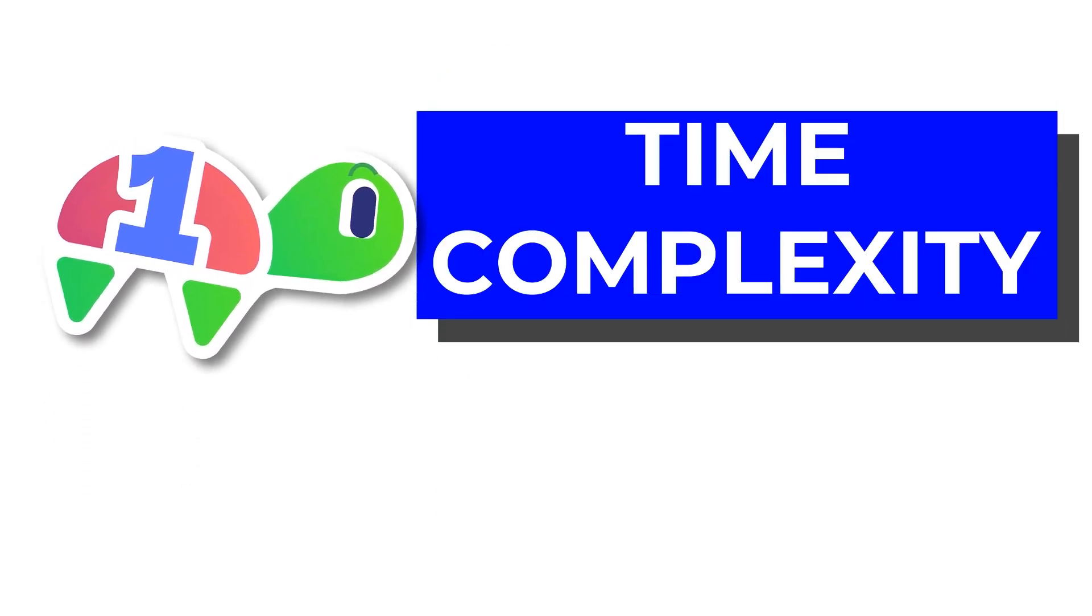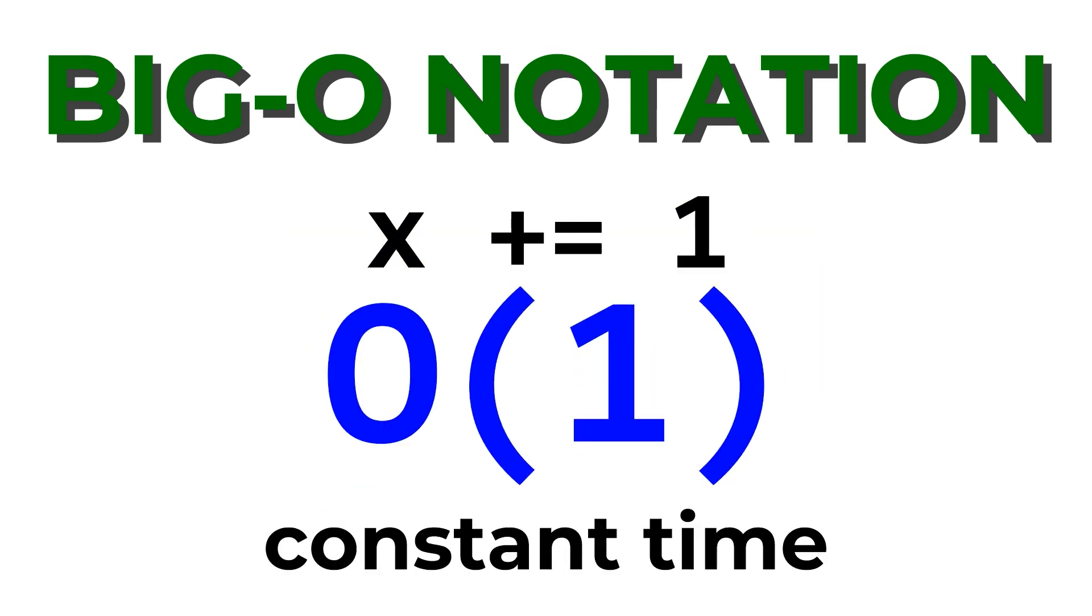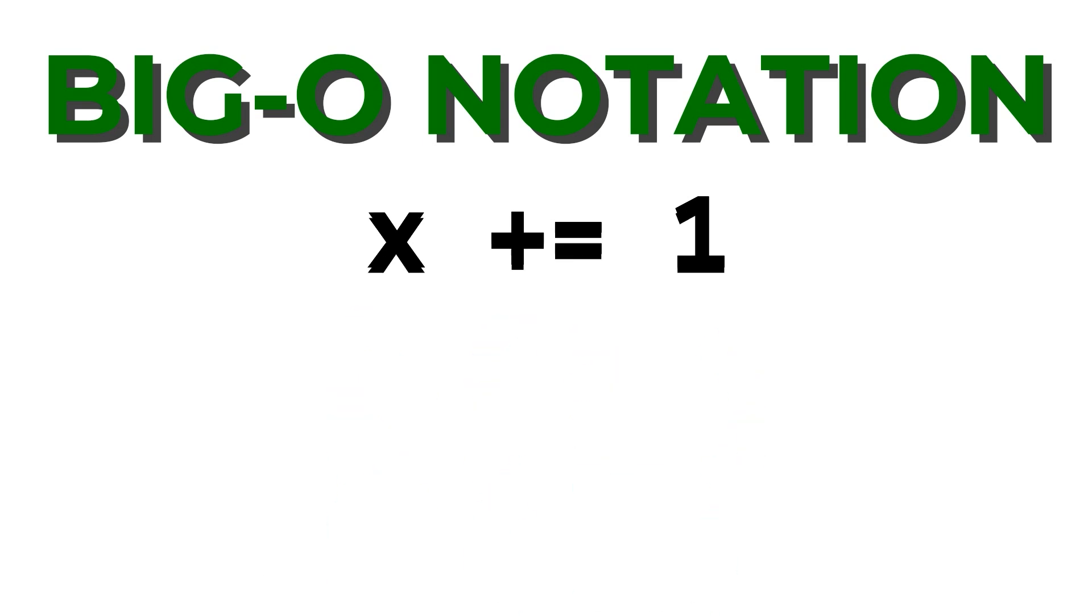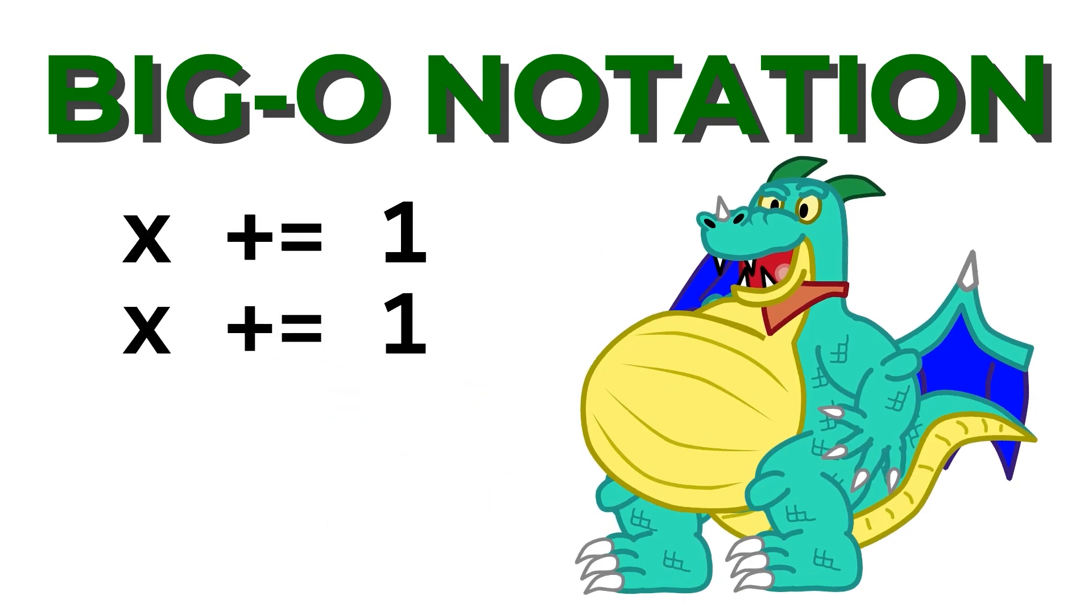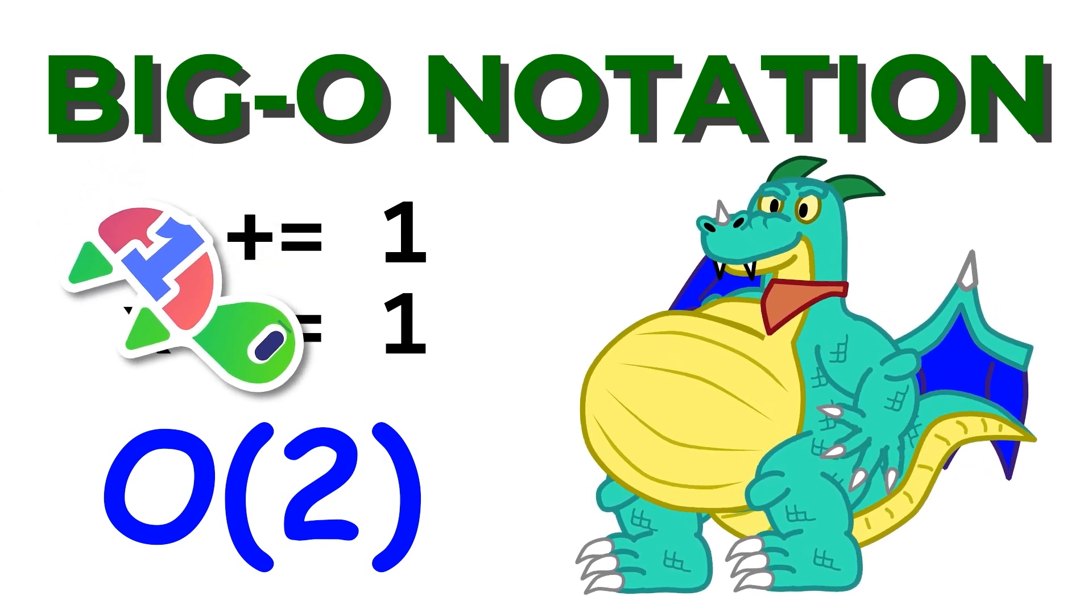How long does it take an algorithm to run, and how do we quantify that? In other words, what is the time complexity of an algorithm? Well, we can quantify that in terms of big O notation. For example, adding one value to the variable x runs in one operation, so it's big O of one, or constant time. Adding to x twice is... It's O of two! No, it's also O of one.